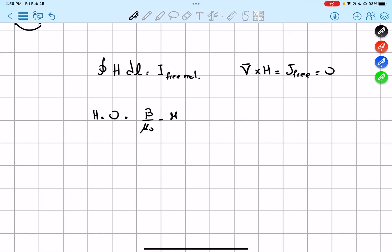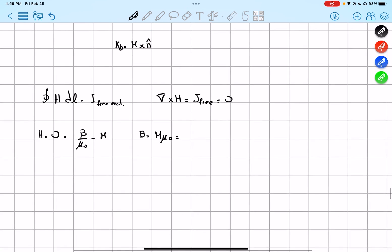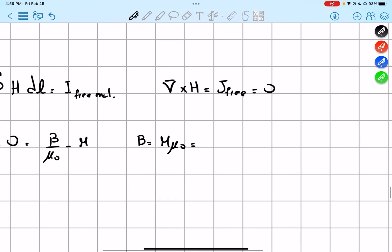So, we can find B by saying that it has to be equal to M times mu0, and so equals to, M is equal to Ks z hat, so Ks mu0 in the z hat direction.